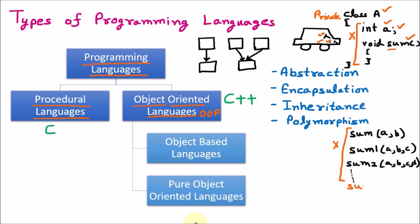Object-oriented programming solves this with polymorphism — same name, multiple forms. We can use the same name sum for two variables, three variables, or even four variables like a, b, c, d. The name will be the same. Calling sum(1, 2) will invoke the first function; sum(1, 2, 3) will invoke the second; sum(1, 2, 3, 4) will invoke the fourth. This is polymorphism. There are some constraints — the variable types should be different or the number of variables should be different.